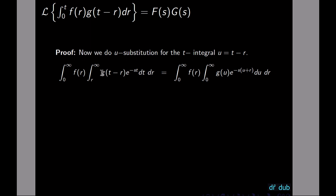With u equals t minus r, g(t minus r) becomes g(u). For e to the negative st, t is u plus r, and r is treated like a constant in the double integration. So t becomes u plus r. Differentiating u with respect to t, treating r as constant, du equals dt.